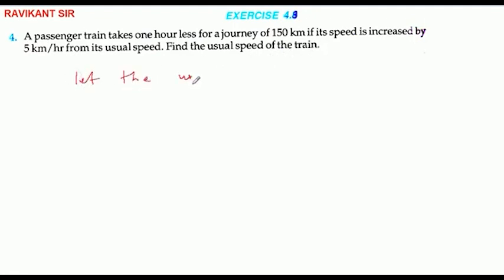The usual speed of the train equal to x km per hour. What is the formula? Time equal to distance by speed. Okay? Now let's see the question according.